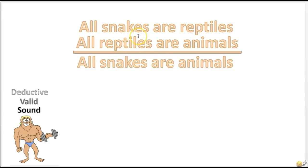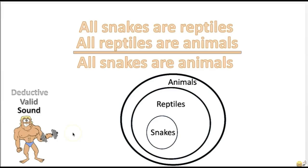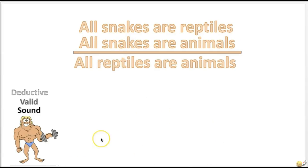Practice problem: is this argument valid or invalid? 'All snakes are reptiles. All reptiles are animals. Therefore, all snakes are animals.' The answer is valid. If you assume that snakes are in the reptiles group, and reptiles are in the animals group, then snakes would also be in the animals group.